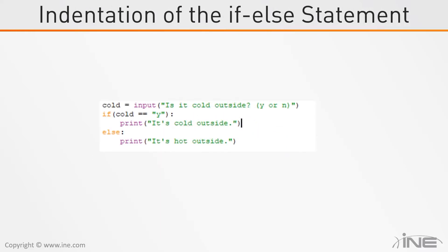So let's look at the code for this statement. Cold equals input, 'Is it cold outside? Y or N?' The user will put in a letter, and then if cold is true, it'll print 'it's cold outside.' If it's false, it'll jump down to the else and print 'it's hot outside.' Notice the indentation — your statements under your if statement must be indented and your statement under the else must also be indented. This is extremely important. If the indentation isn't correct, it's going to skip right past it and not even check the condition.